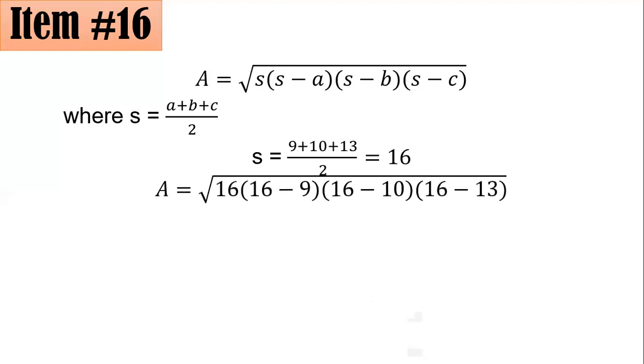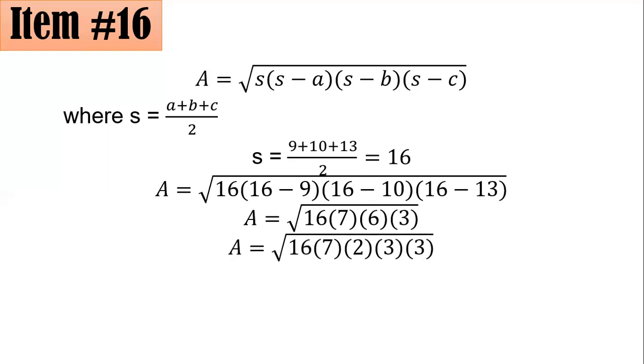And from such, we have A is equal to the square root of the quantity 16 times 16 minus 9 times 16 minus 10 times 16 minus 13. And you could see that 16 minus 9 is 7, 16 minus 10 is 6, and 16 minus 13 here is 3. And so this expression above becomes this one at the bottom. And we could see, you would agree that 16 here is a perfect square already. 6 could be factored as 2 times 3. And the rest were just copied.